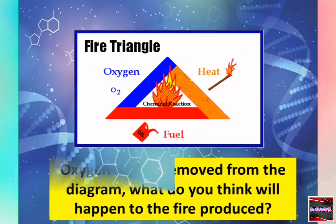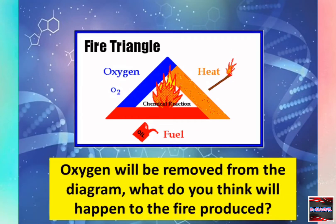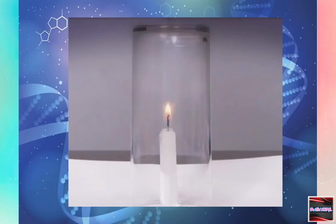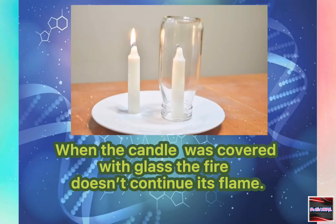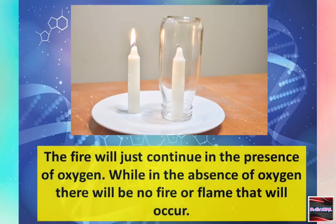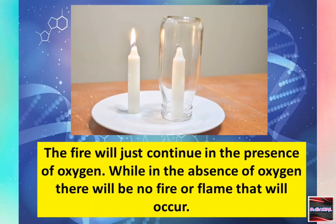Oxygen will be removed from the diagram. What do you think will happen to the fire produced? What will happen if we cover the candle with glass? When the candle was covered with glass, the fire doesn't continue its flame. The fire will continue in the presence of oxygen, while in the absence of oxygen there will be no fire or flame.